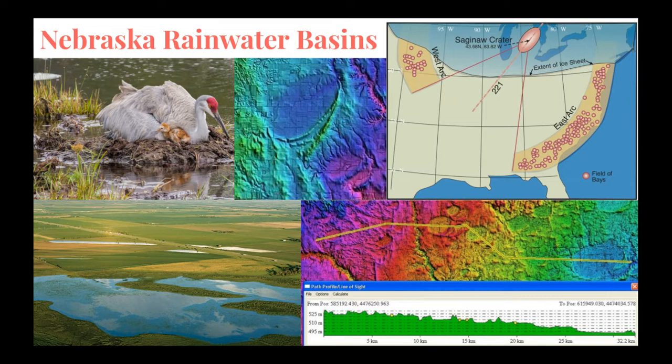What we're talking about here is a cosmic impact onto a North American ice sheet in the Saginaw Bay region of Michigan. The secondary icy ejecta was launched from that site and came crashing back down along the East Coast, forming this arc right here along the coastal plains, and when they came down they created the Carolina Bays.